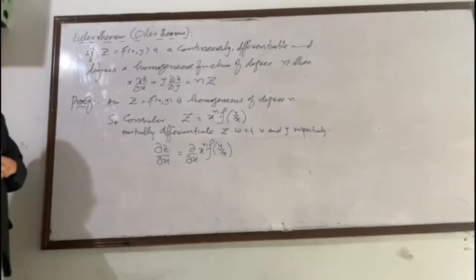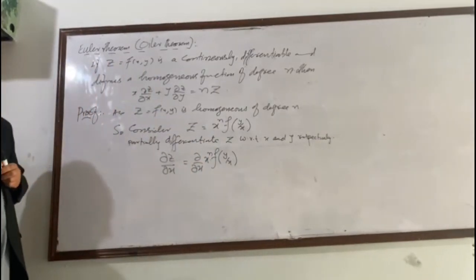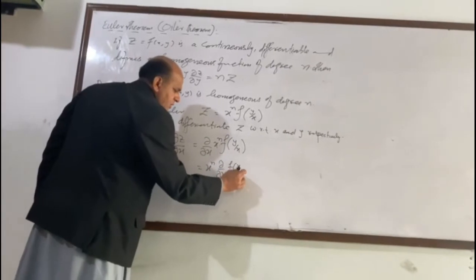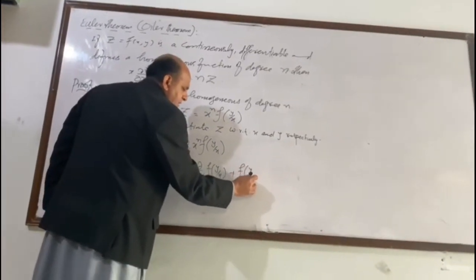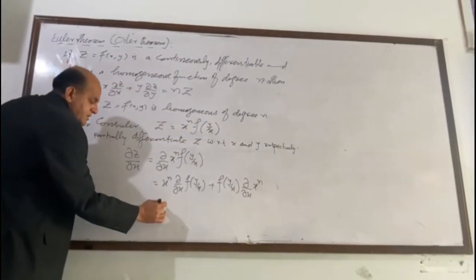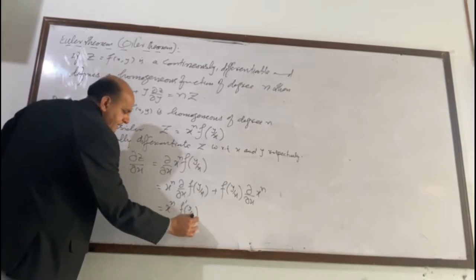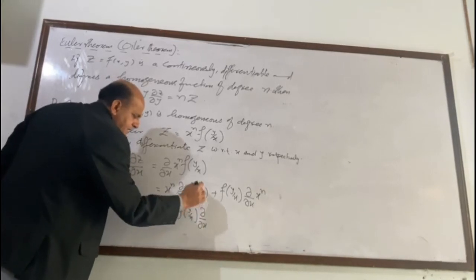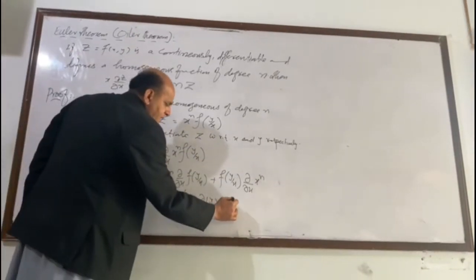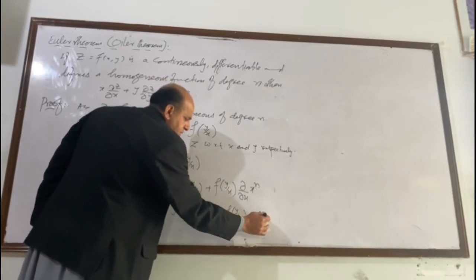Here we have two functions: x^n and f(y/x). So we apply the product rule. The first term is: x^n · (∂f/∂x) plus f(y/x) · (∂/∂x)(x^n). Now, the derivative of f(y/x) is denoted f′(y/x), but then we must also differentiate the function inside f, that is y/x. The derivative of x^n brings the power n to the coefficient and decreases the power by one.